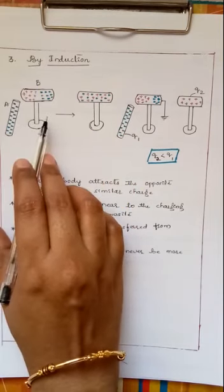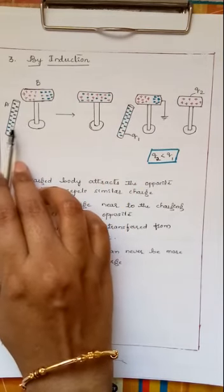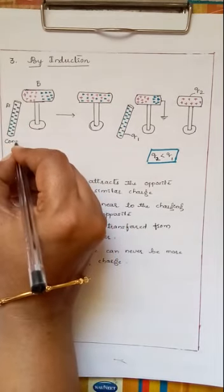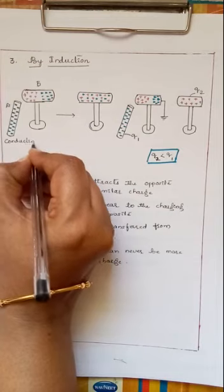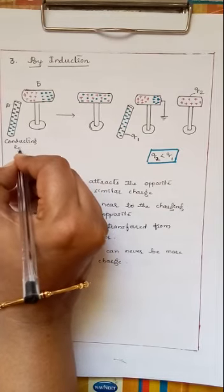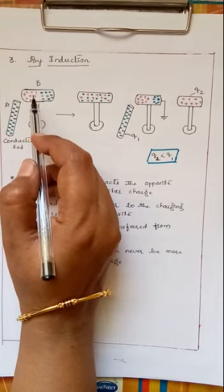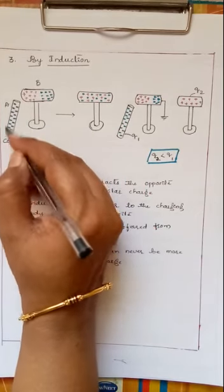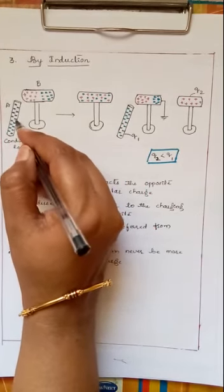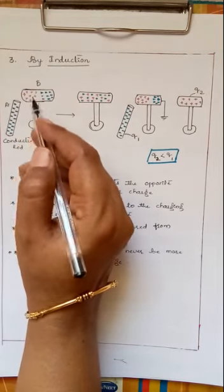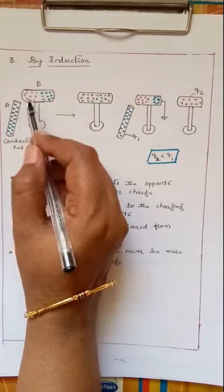So when I bring nearby, here we are not going to bring in contact like in conduction, just I will bring it nearby this. If I bring this conducting rod which is already negatively charged nearby the B conductor, we are going to observe that since it is having large amount of negative charge, it is going to attract the positive charge.